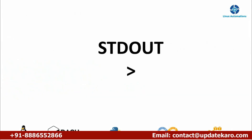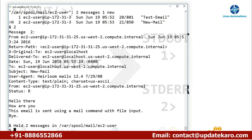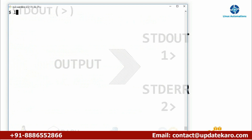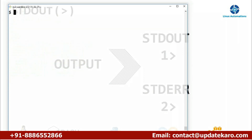Next, let's talk about standard output. We already talked about standard input where we take input from a file. Standard output is what we normally see on the terminal — now we want to redirect it to a file. The output is of two types: standard output and standard error. For example, using 'ls /boot' gives us the contents of the boot directory on screen. If I want to redirect that to a file, I use 'ls /boot' with the redirector symbol.